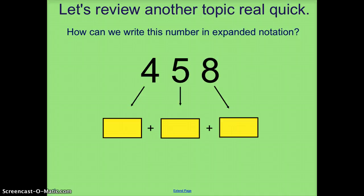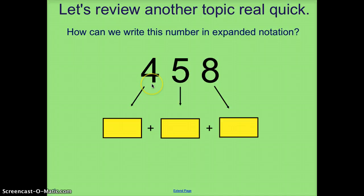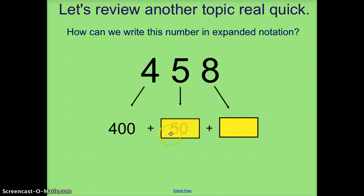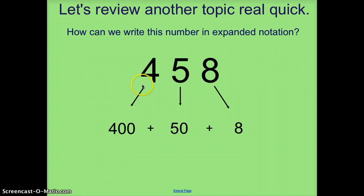Here's the problem for the number 458. If I'm going to break that down into three different place values, I'm going to look at the value and the number in that place value. I see this is a 4 in the 100s, so it's worth 400. This is a 5 in the 10s, so it's worth 50. And an 8 in the 1s is worth 8. So 458 expands into 400 plus 50 plus 8.